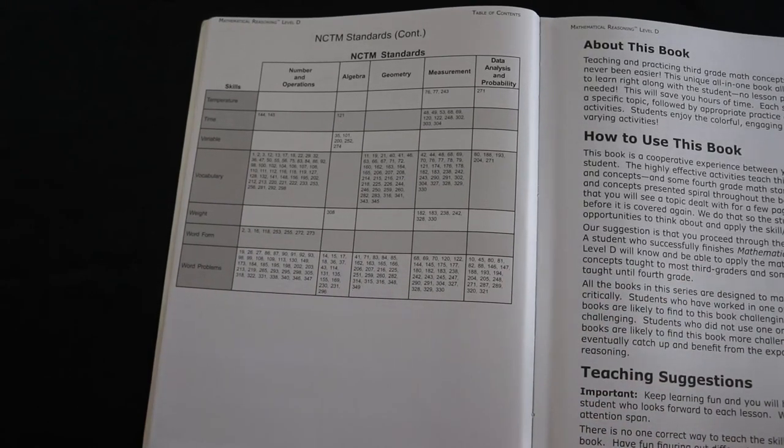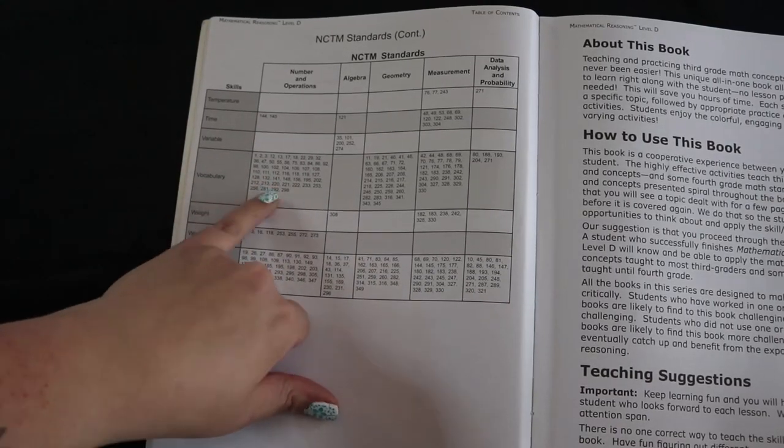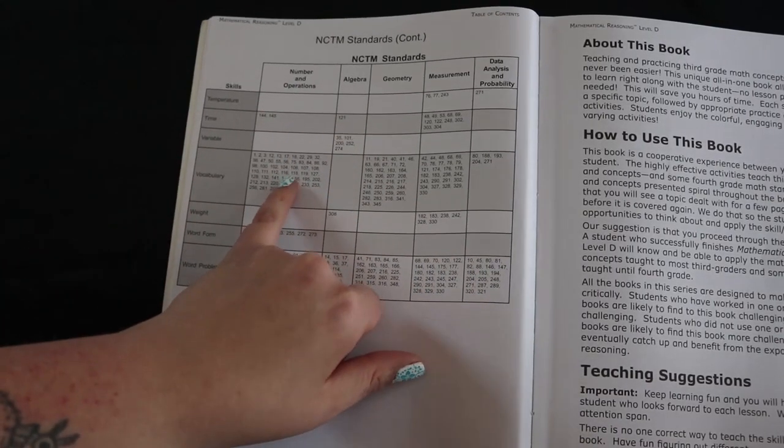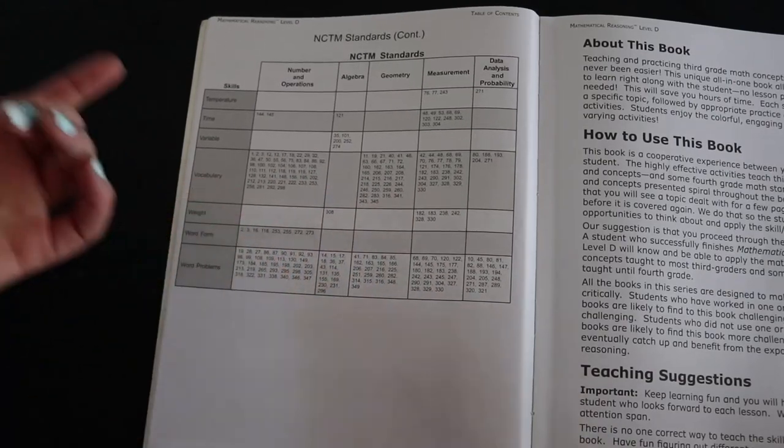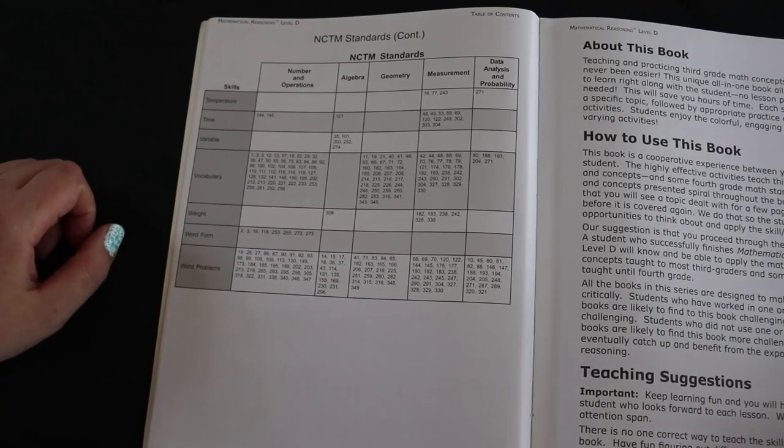And then, should you want to use this as a supplemental resource, they list page numbers for each of these skills and what operations, or standards rather, that they go under. So should you want to jump around instead of work page by page, that'd be extremely helpful.